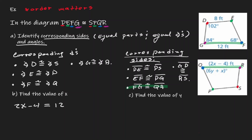If we add 4 to both sides, now we have 2X is equal to 16. And then if we divide by 2, we know now that X is equivalent to 8.